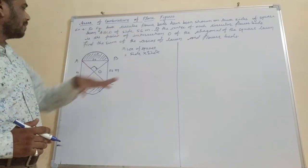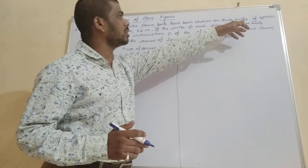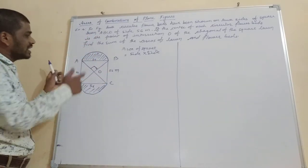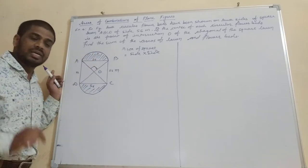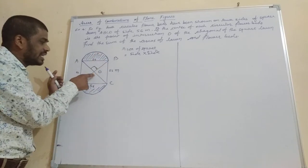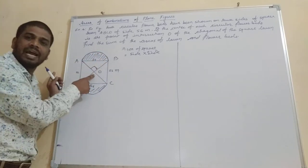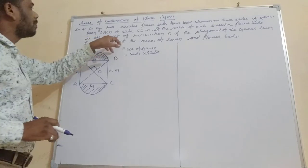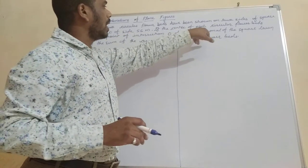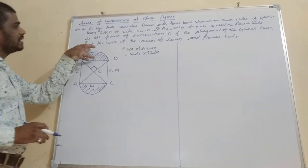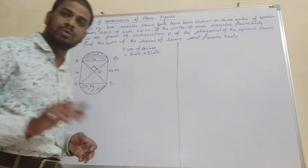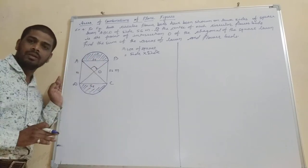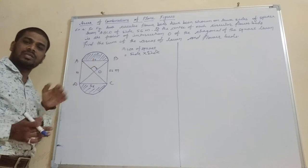In the figure, 2 circular flower beds have been shown on the sides of a square ABCD. The center of the flower beds is at the center of the diagonals of the square. Diagonals AC and BD are intersecting at O, and this O will be the center of the flower beds. We have to find the sum of the areas of the square and the flower beds — that means area of the square plus 2 times the area of one segment.